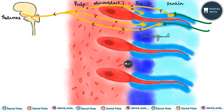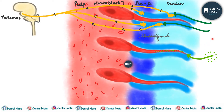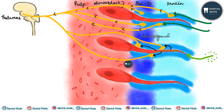Next is the transduction theory. According to this theory, the odontoblastic process is the primary structure excited by the stimulus. The stimulus excites the odontoblastic processes present within the tubules — unlike the direct stimulation theory where nerve endings in the dentine were directly stimulated. In the transduction theory, the stimulus excites the odontoblastic processes, and from the inner dentine the stimulus is transmitted to the thalamus.